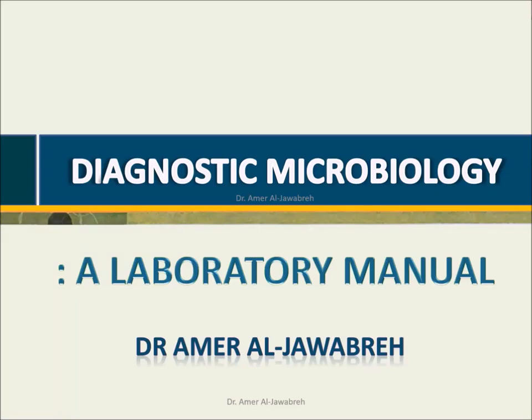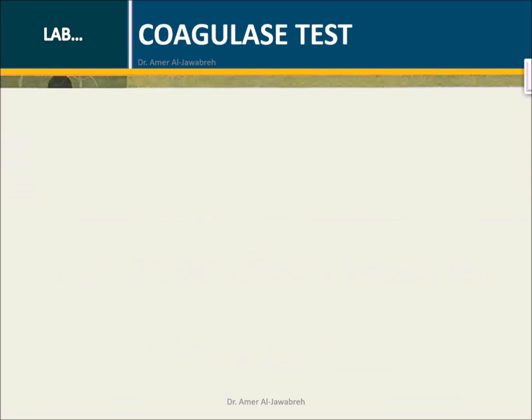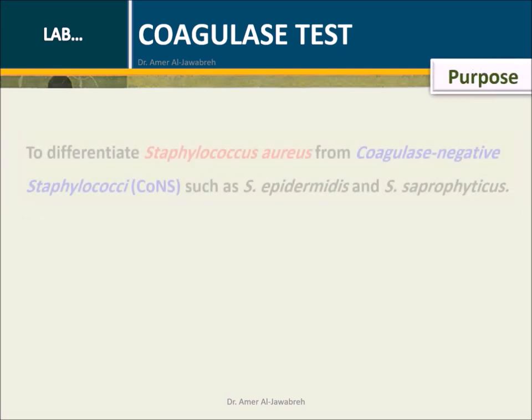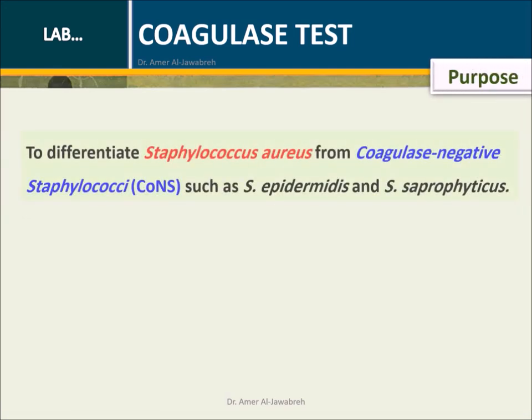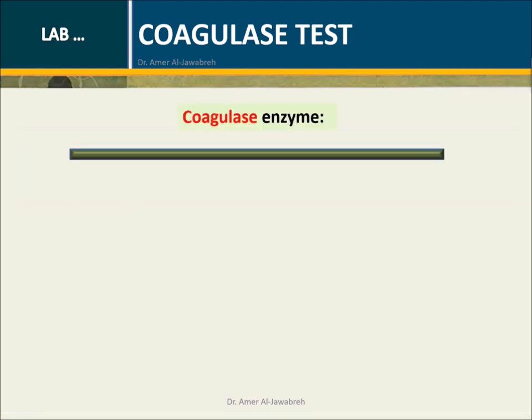Diagnostic Microbiology, a laboratory manual — Coagulase test. Purpose: to differentiate Staphylococcus aureus from coagulase-negative Staphylococci, such as S. epidermidis and S. saprophyticus.